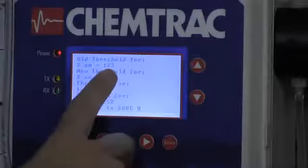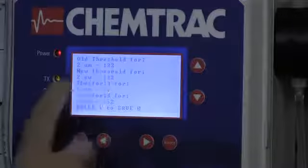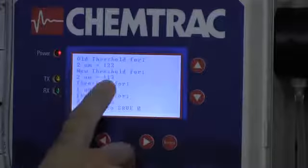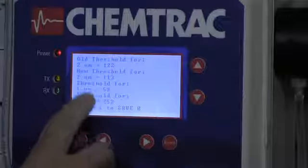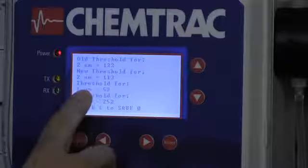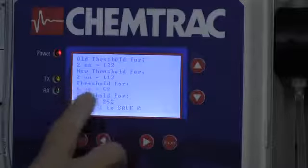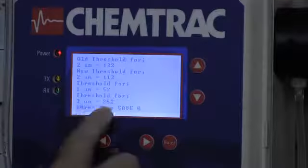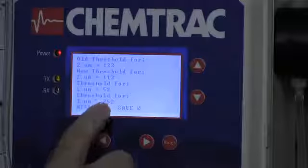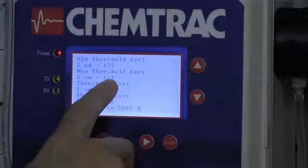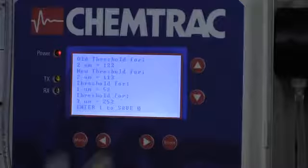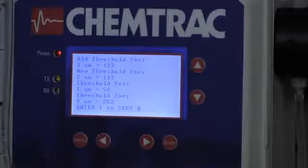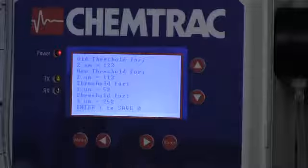And it's going to show us what our old threshold value was, which was 122. Our new threshold value is 113. And it also tells us what the neighboring thresholds were. So 1 micron threshold, which we're not looking at 1 micron particles, but there is a threshold there for it. It's 52 and 3 micron is 252. What we want to make sure is that the 2 micron threshold never overlaps the neighboring threshold settings. If it did, then something is wrong with the calibration or the sensor.